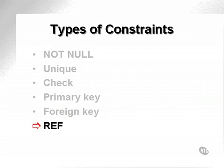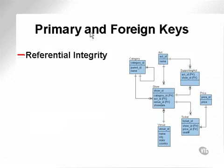A reference constraint is an object pointer reference to another object. Primary and foreign key constraints are used to validate the referential integrity of a database. Referential integrity is the validity or correctness of the relationships between the primary and foreign keys.